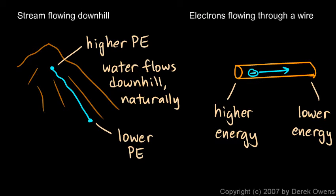Electrons do that all by themselves, and this electron moving inside the wire is the current flow — the flow of charge, the electric current. That happens automatically if you have one place of higher electrical energy and another of lower electrical energy. The electrons will always move to a place of lower potential energy, just like water naturally flows downhill. The word 'voltage' is the term we use to describe this difference in electrical potential energy between two points.